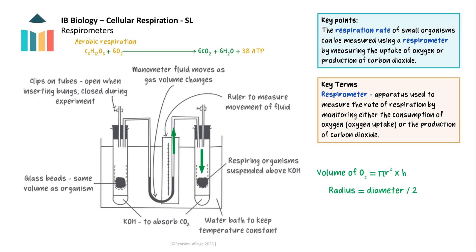The rate of oxygen uptake provides a direct measure of the rate of aerobic respiration — the faster the oxygen is consumed, the higher the rate of respiration. To ensure accurate results, the entire apparatus is placed in a water bath to maintain a constant temperature. This prevents temperature fluctuations from affecting the gas volume, as changes in temperature could alter the pressure and rate of respiration and confound the measurements.